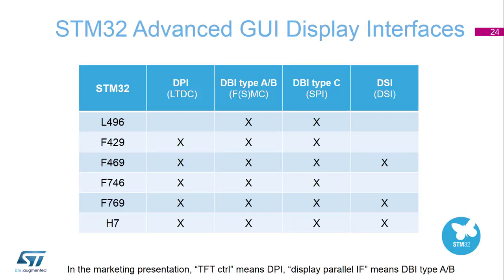Here is a quick view of the existing MCUs and the display interfaces they support. The most recent, the H7, supports all modes because it contains an LTDC and also supports the DSI mode, and of course contains FSMC and SPI peripherals. Note that in marketing presentations, 'TFT control' means DPI and 'display parallel interface' means DBI type A or B. In the lab associated with this presentation, we will use an F469, which supports all the display interface modes.